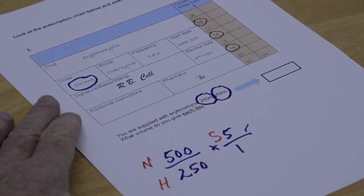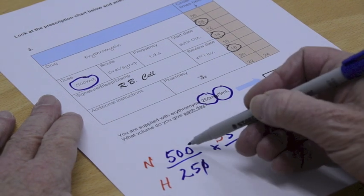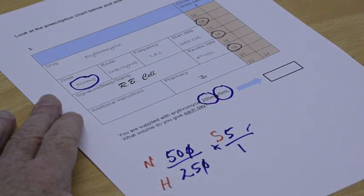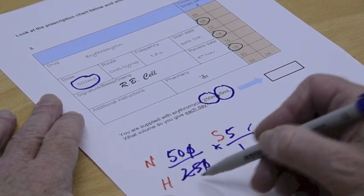So now we need to do some cancelling down. We can take our noughts off here or don't forget to divide by 10. You might see that 25 goes into 50 straight away. That's a good way of doing it.